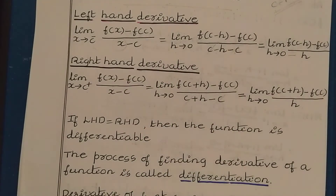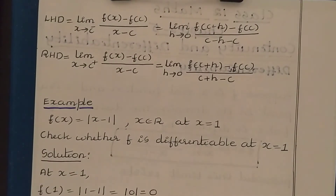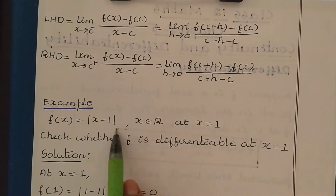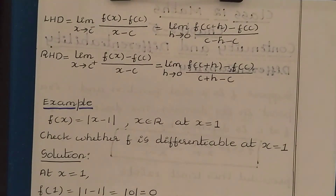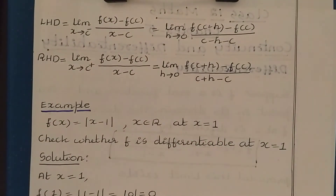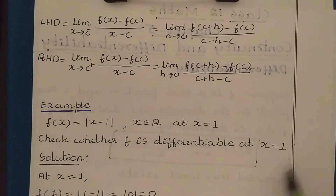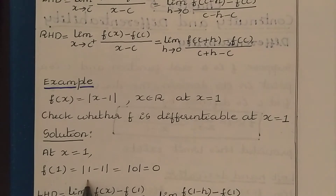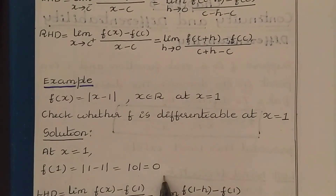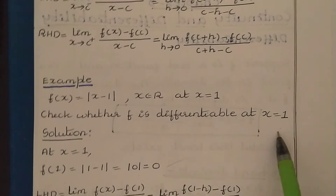Let us take one example to understand the differentiability concept related to a function. I have taken a function f(x) is equal to mod(x minus 1), where x is a real number, and we check at x is equal to 1. We have to check whether this function is differentiable at x equal to 1 or not. To check differentiability, we need to find the left-hand derivative and right-hand derivative. First, let us find the value of the function at x equal to 1: f(1) is equal to mod(1 minus 1) is equal to mod(0) is equal to 0.